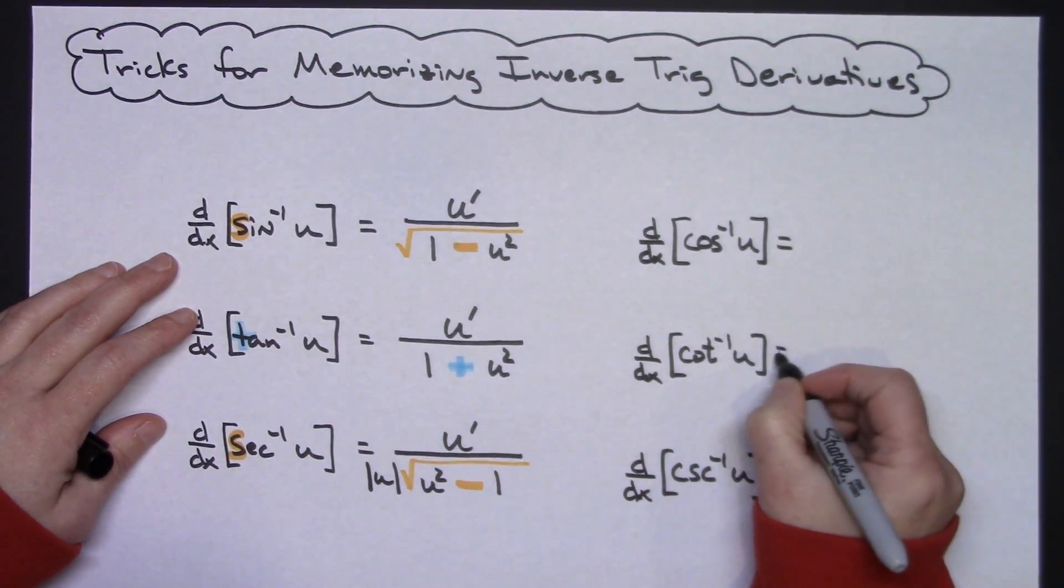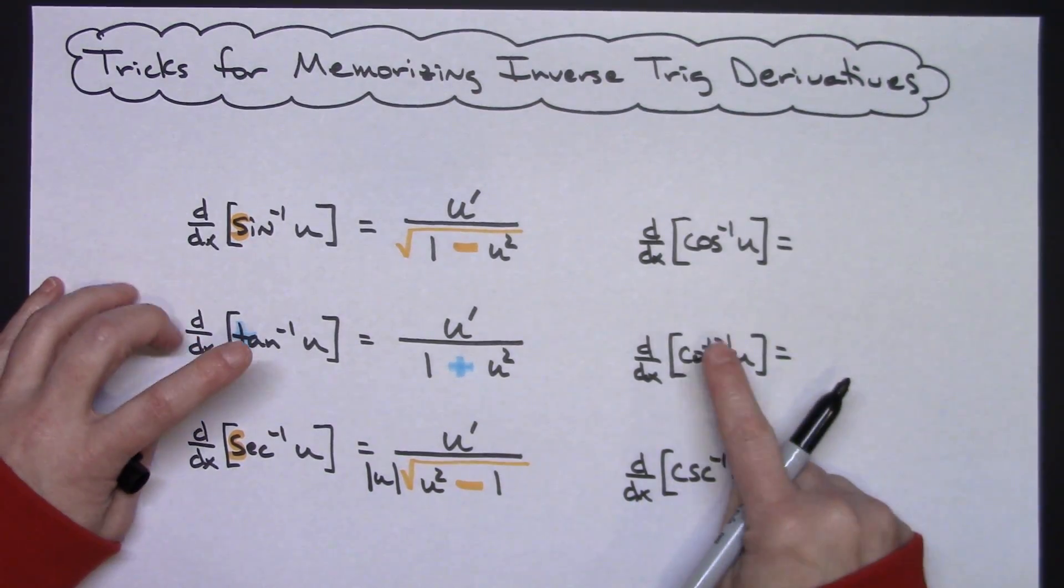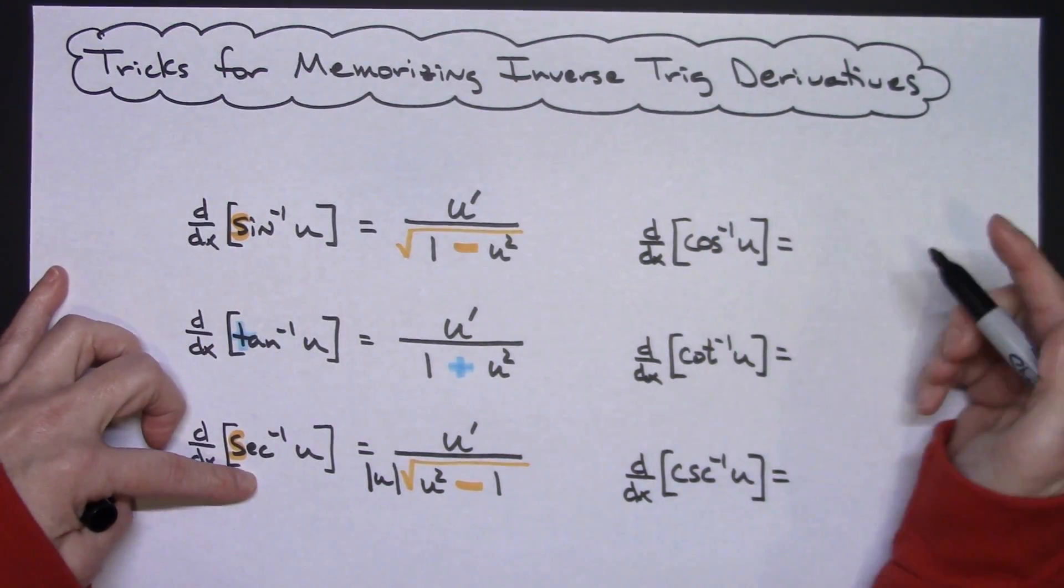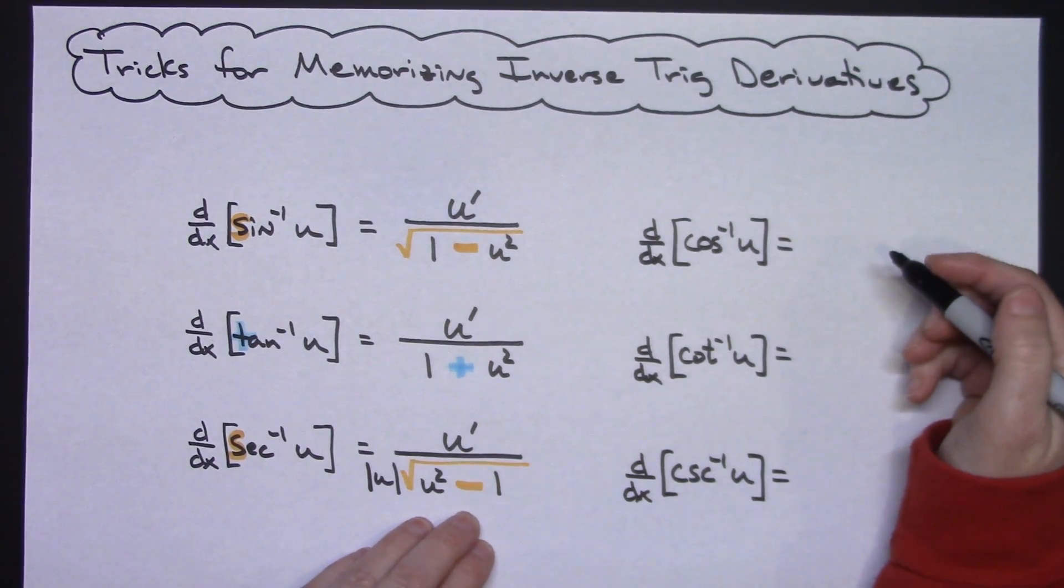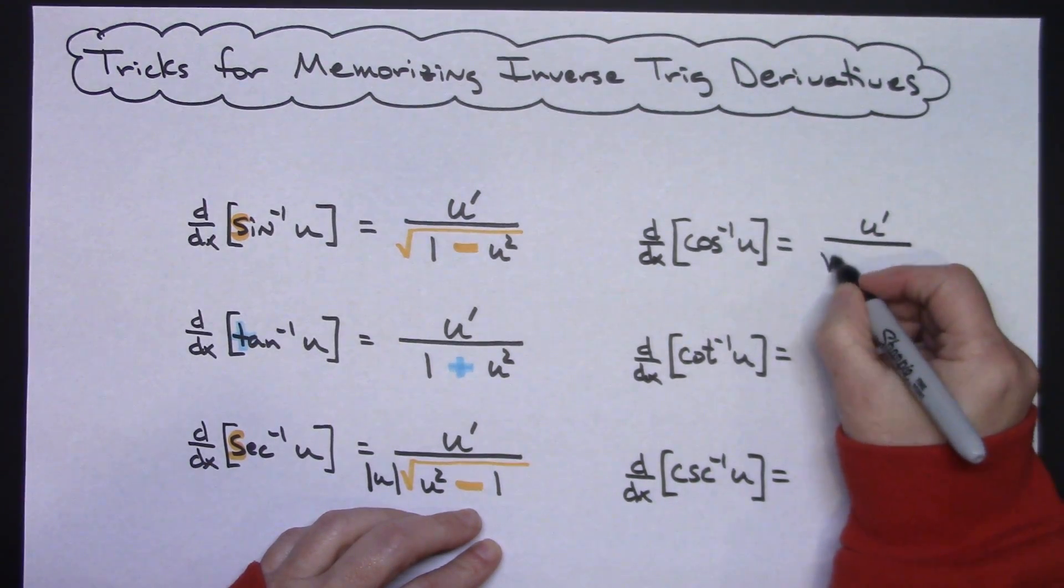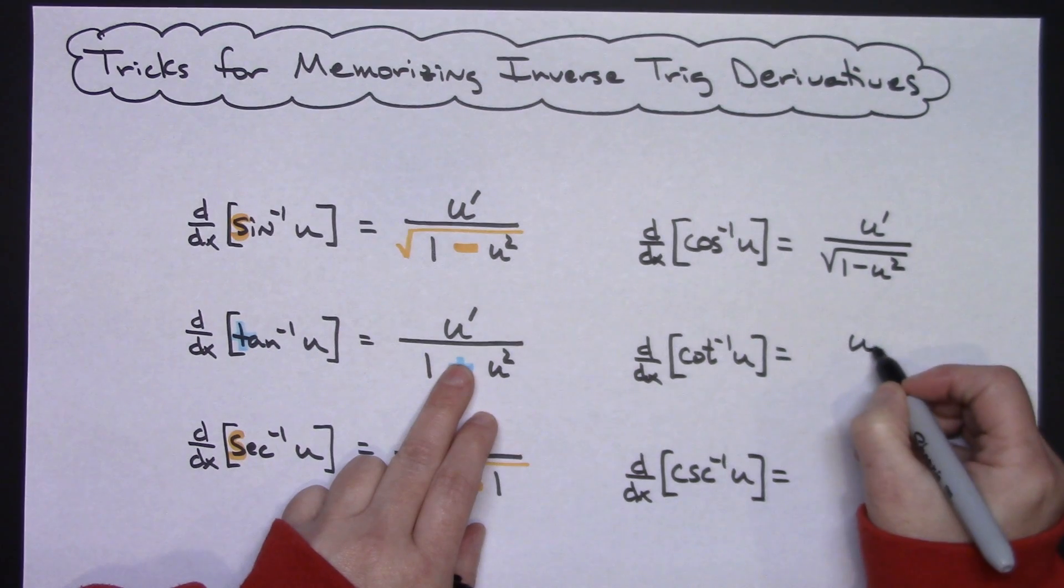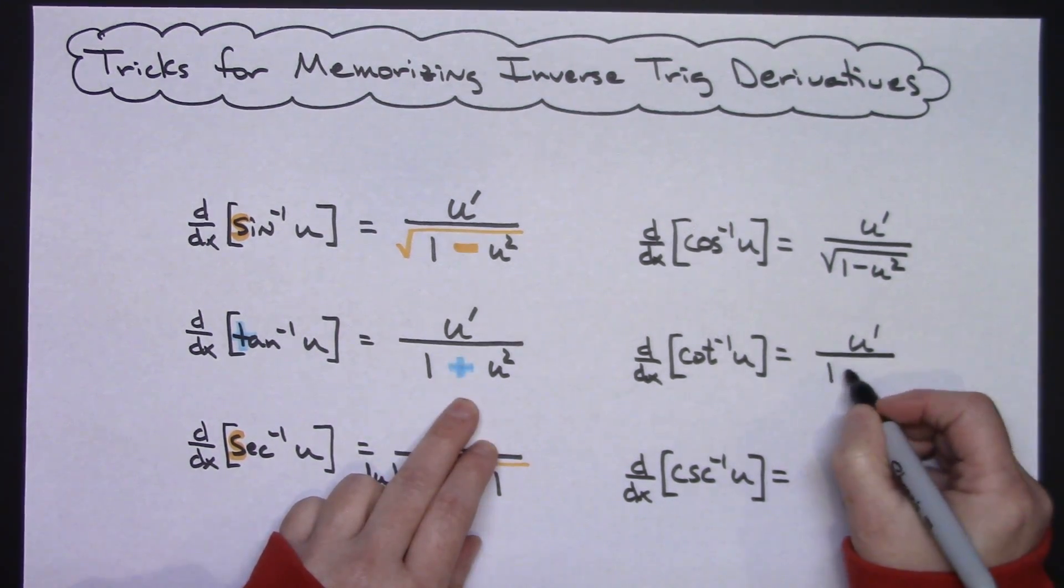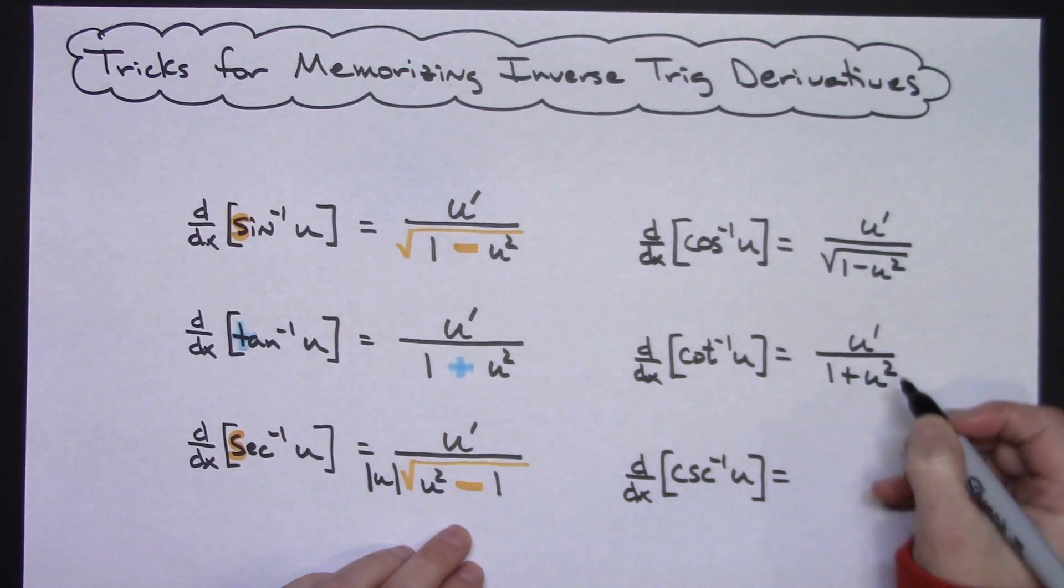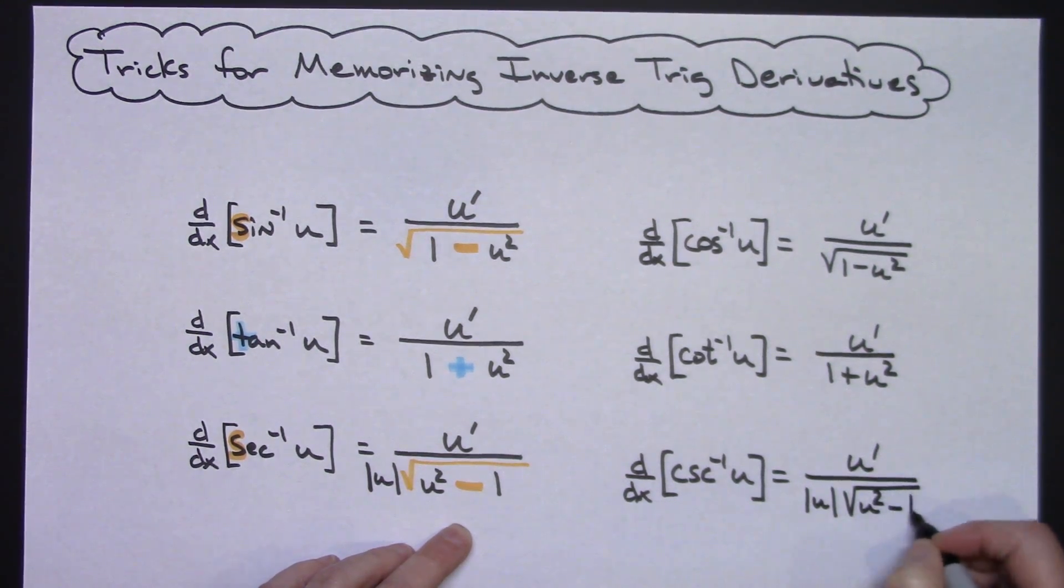Now equals, equals, equals. As long as you make sure you've got these in the right order and they correspond logically, it makes sense, then all you have to do is copy these down exactly as you would see it. So U prime over the square root of 1 minus U squared, U prime over 1 plus U squared, and U prime all over absolute value of U square root of U squared minus 1.